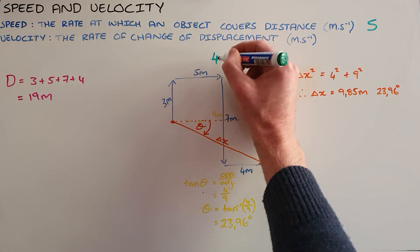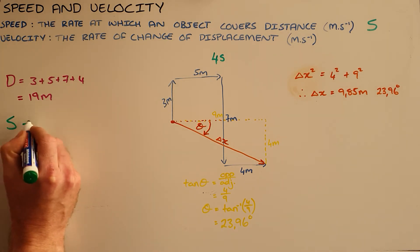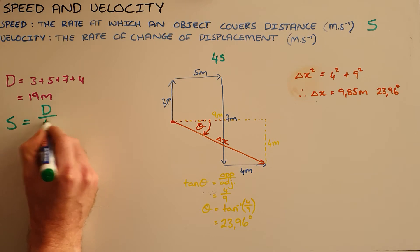Now if we know that this object covered that distance in 4 seconds, then we can calculate the speed using the simple formula: speed is equal to distance over time.